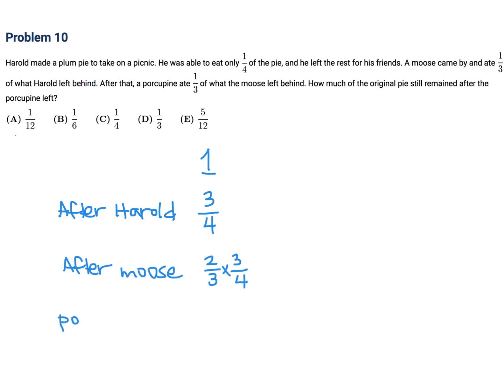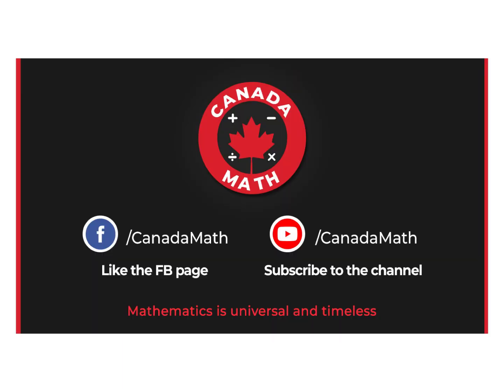Then finally, you have the porcupine. And the porcupine ate one-third of what's left. So what's remaining is two-thirds of what was left after the moose, which is two-thirds times three-quarters. So that's how you do this question. And then, of course, I've got to calculate this. So this is 4 over 12, which is one-third. Yeah, one-third. So if it's one-third, then that is choice D.